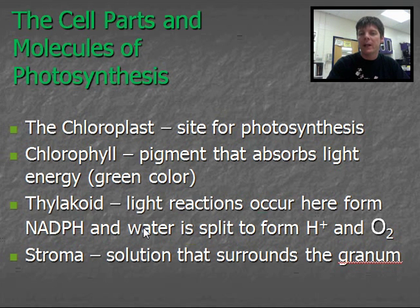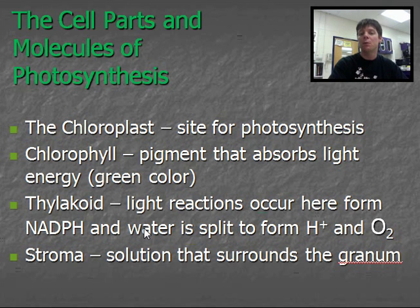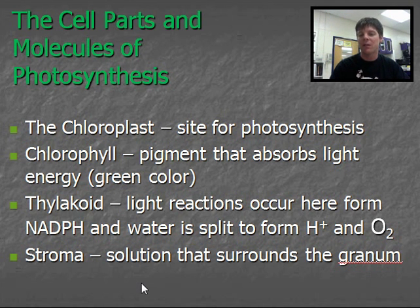The thylakoid is a structure inside of the chloroplast. This is the location for the light reactions where NADPH, an important molecule, is being formed. This is also where water is being split to form oxygen, and we're forming hydrogen ions which play a really important role in later cycles that we'll discuss in this video. Finally, the stroma. This is the solution that surrounds the granum — the fluid on the inside of the chloroplast.